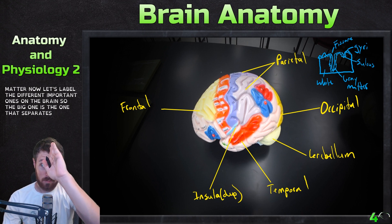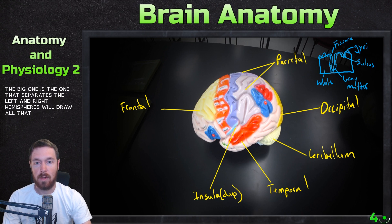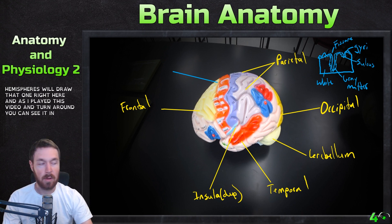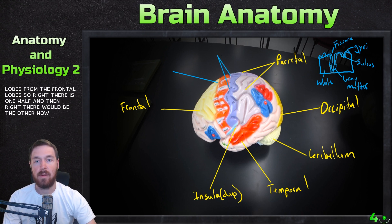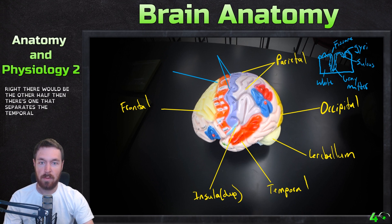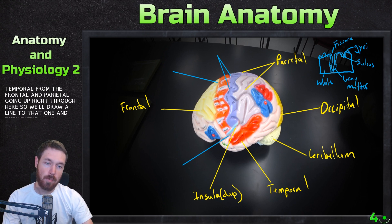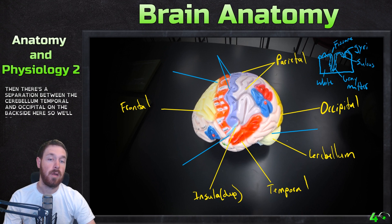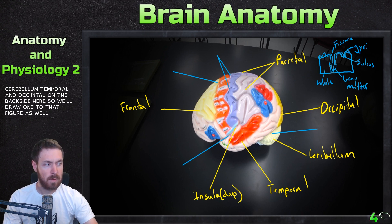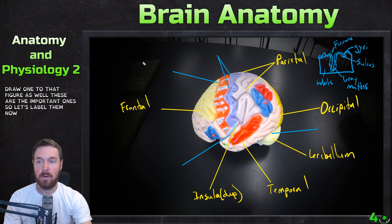Now let's label the important fissures and sulci on the brain. The big one separates the left and right hemispheres — you can see it in the middle as the video turns. There's also one that separates the parietal lobes from the frontal lobes, one that separates the temporal from the frontal and parietal running up through here, and a separation between the cerebellum, temporal, and occipital on the back side.